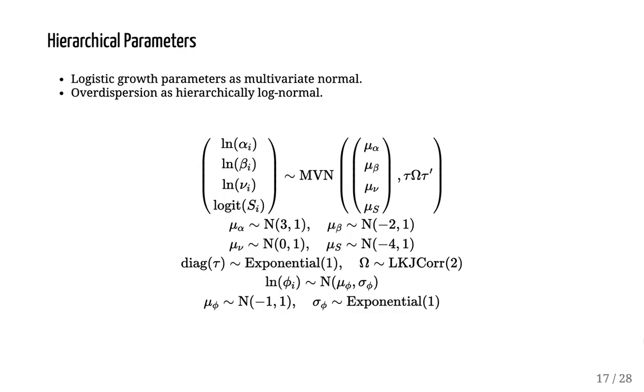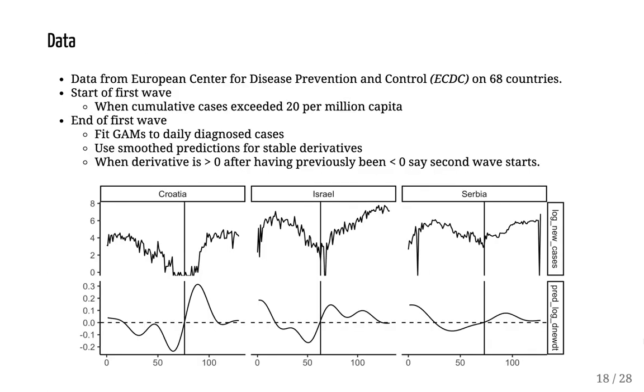In STAN, it's pretty simple to take the covariance matrix and split it up into a diagonal matrix of marginal standard deviations, tau, and a correlation matrix, omega. Actually, we are modeling the Cholesky decomposition of omega, but we can write it like this here, and the overdispersion, the country-specific overdispersion, we give that a log-normal prior.